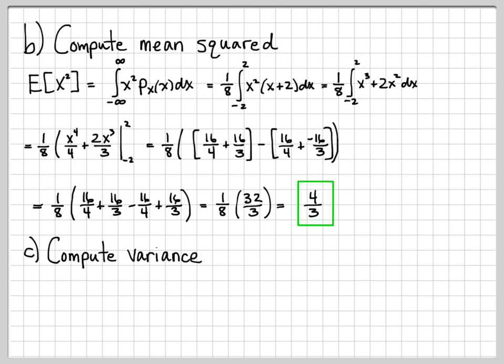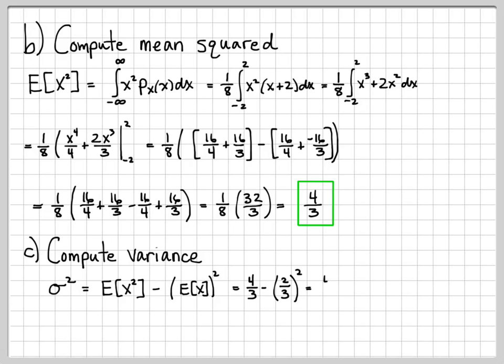Finally, let's compute the variance of the random variable x, denoted sigma squared. By definition, this is the expected value of x squared minus the mean of x squared. We've already computed these: from part b, E[x²] = 4/3, and from part a, the mean = 2/3. So this turns into 4/3 minus (2/3)², which is 4/3 minus 4/9, which is 12/9 minus 4/9, giving 8/9. So the variance of this random variable is 8/9.